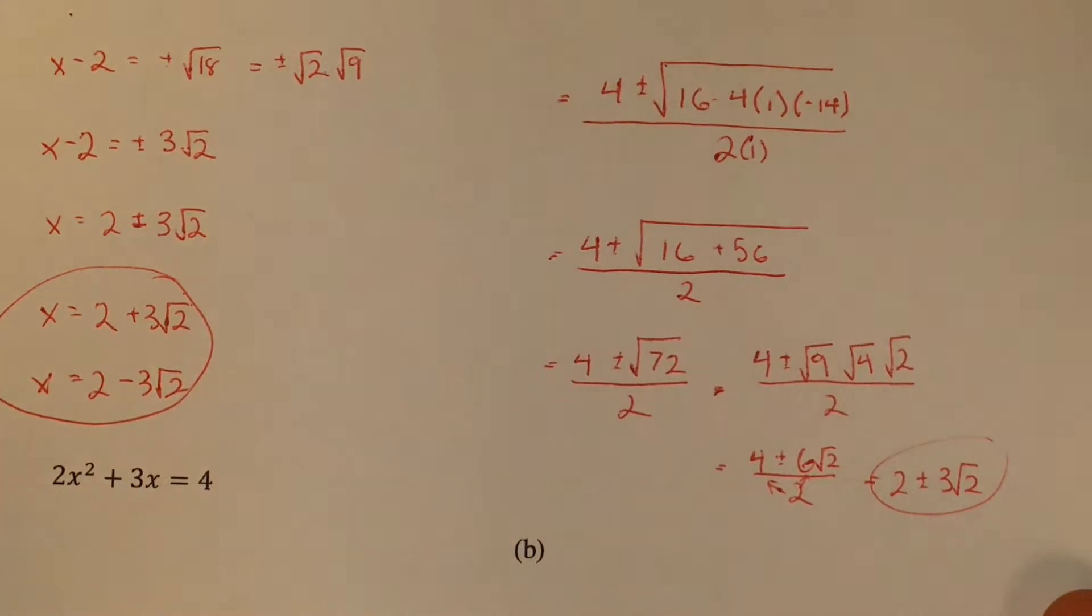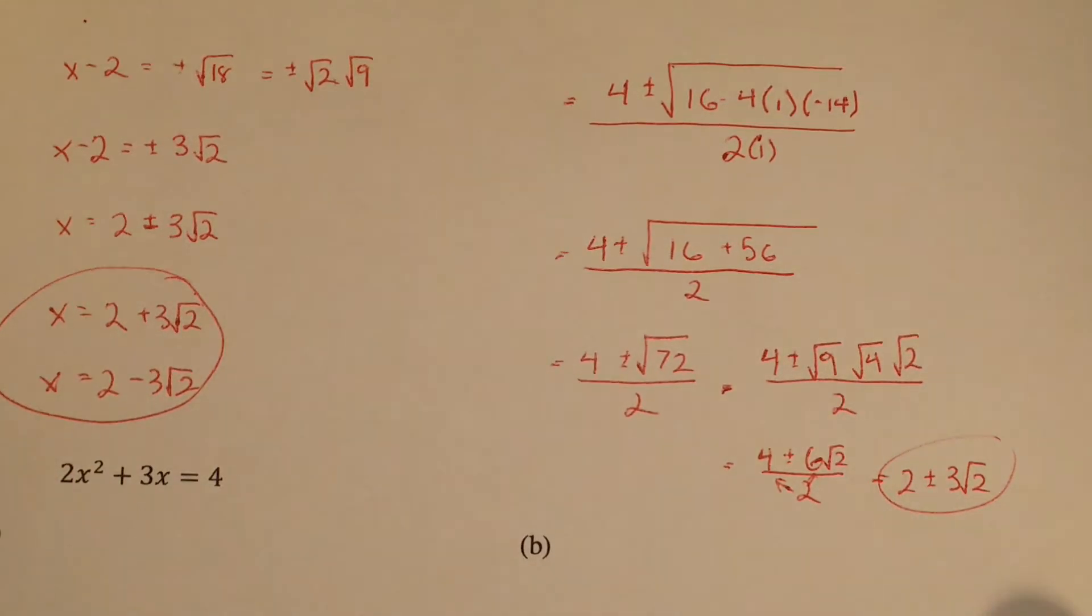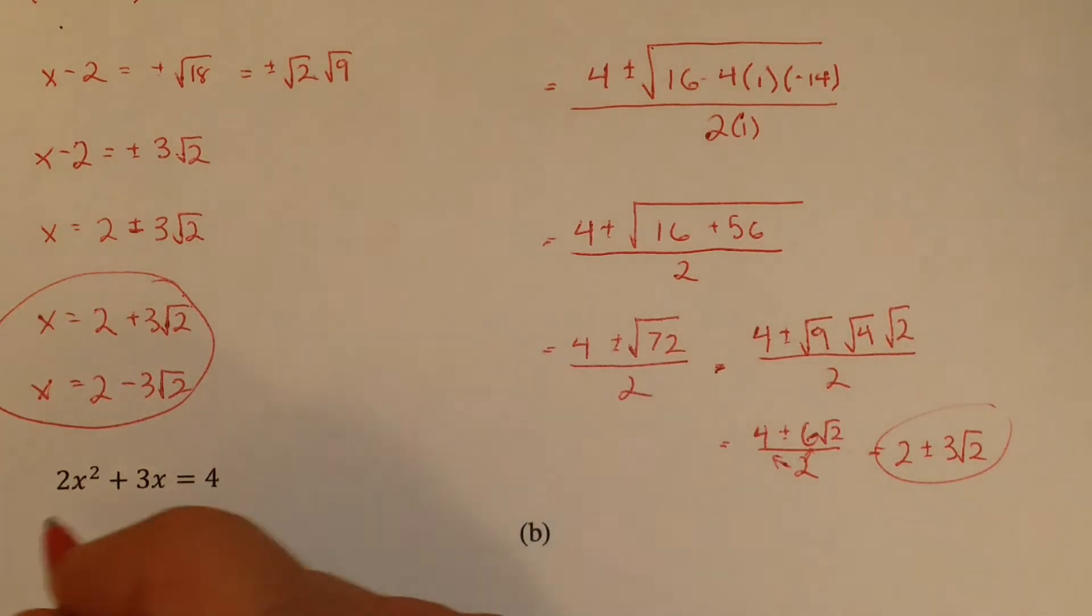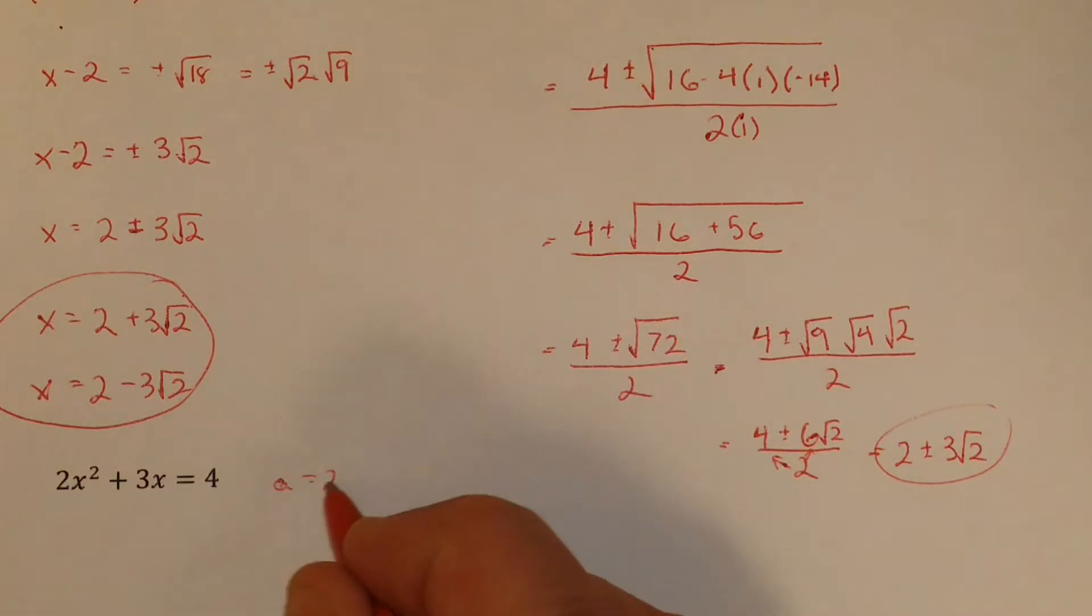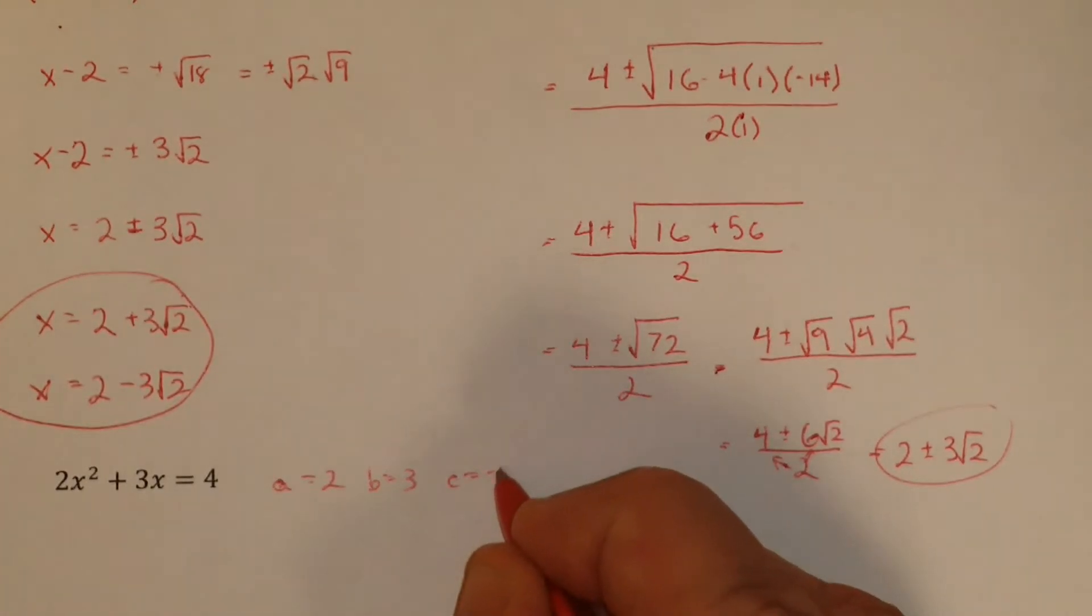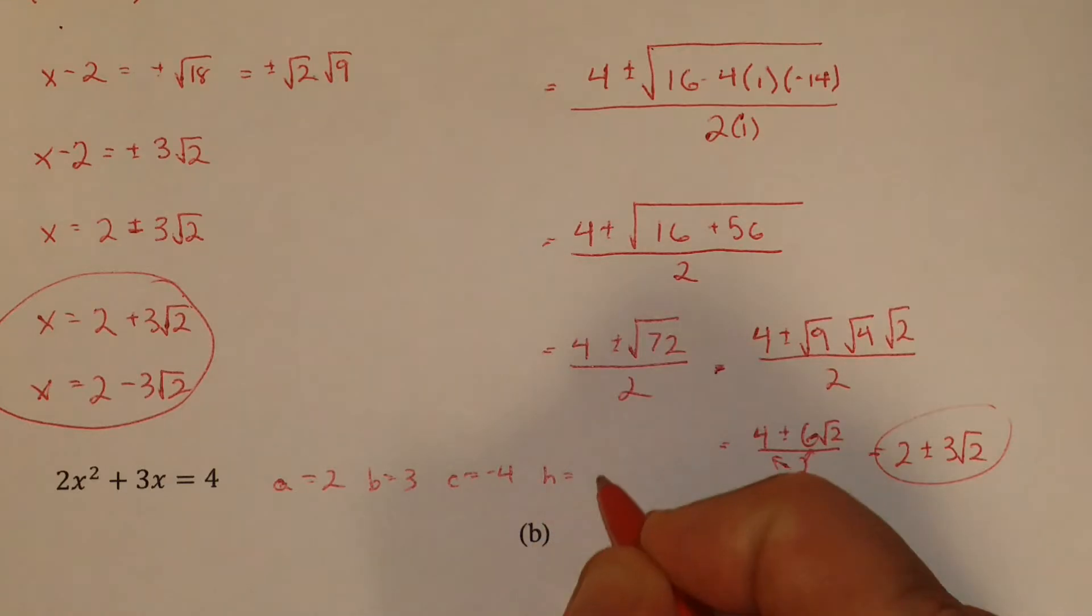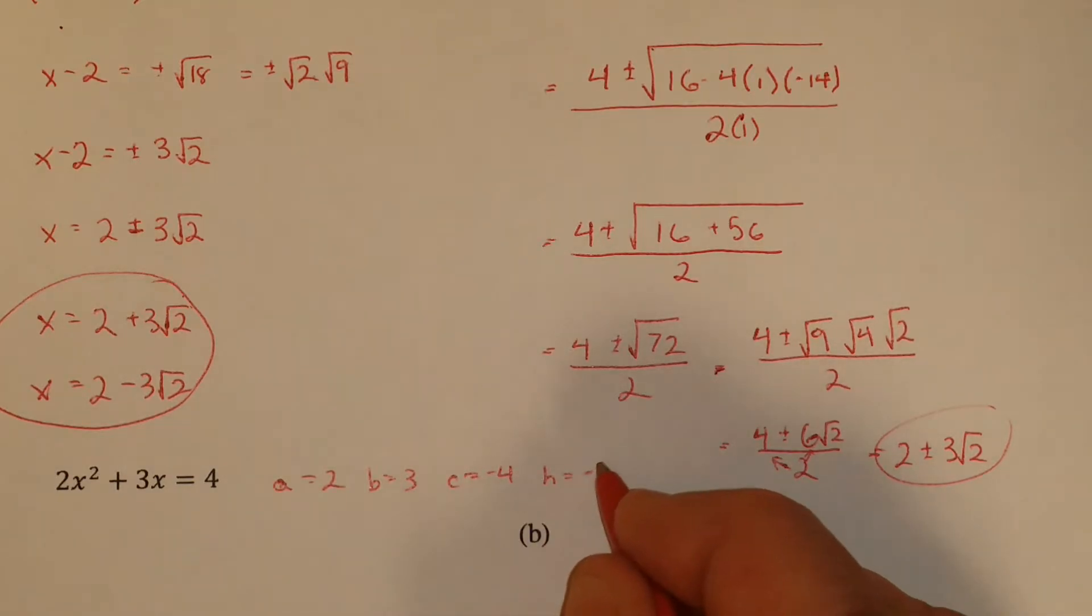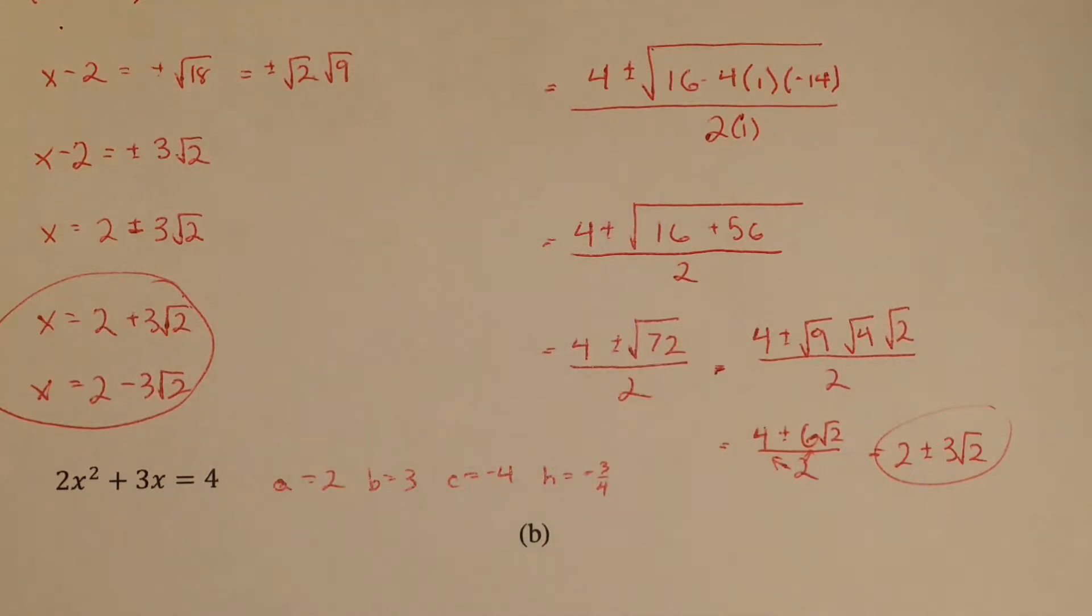So that one's good to go. Over here, we have to note that a is 2, b is 3, and c is negative 4 if it were in standard form. So h, what's h? h is negative 3 over 4. We're going to need that later.